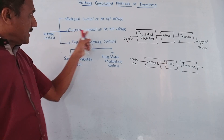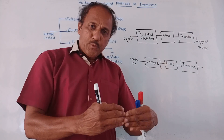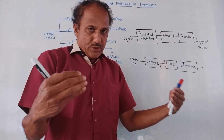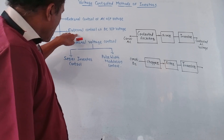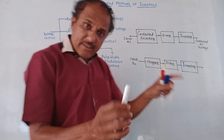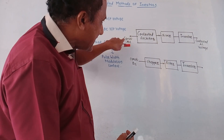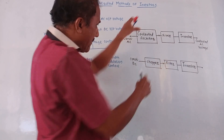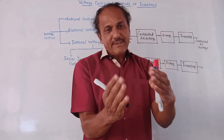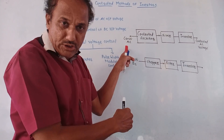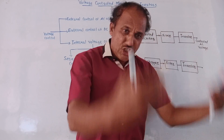The next technique is external control of DC input voltage. In the case of an inverter, at the input side we apply DC and at the output we get AC voltage. If the available input is constant AC voltage, then as shown in the first diagram, we use one controlled rectifier. It converts the applied constant AC into DC, and being a controlled rectifier, we can vary and change the values.